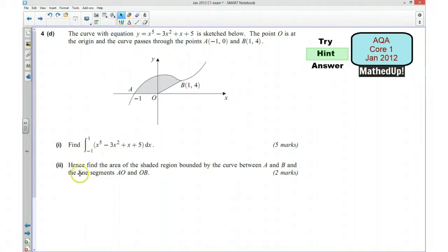For part two, it says hence find the area of this shaded region here. What you want to think about is what we've done so far is we've found the area of all of this, starting with our lower limit which is -1, up to our upper limit which is 1. So we've found the area of all of that.